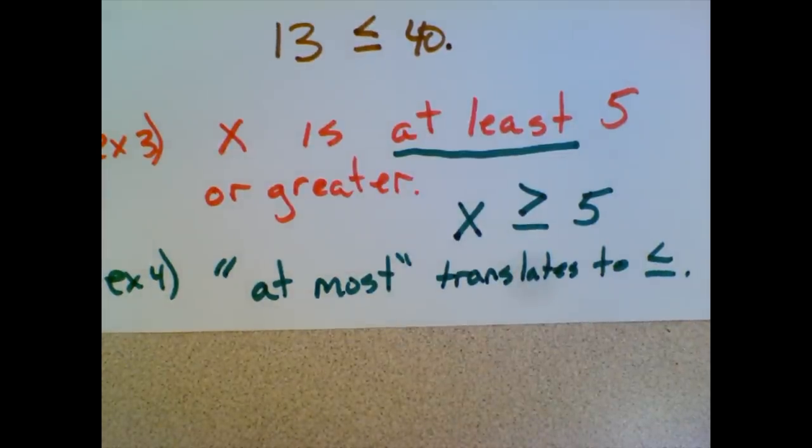So after you practice some of these, it gets a little easier. But you know the keywords. Like, for example, plus is addition, minus or subtract is subtraction. Again, the word for multiplication is product. The word for division is quotient. Those are some keywords that you're going to want to look out for.